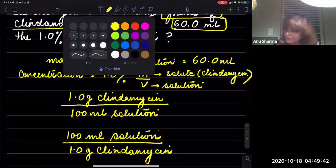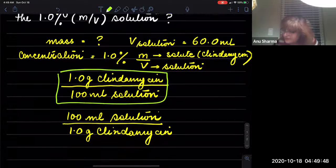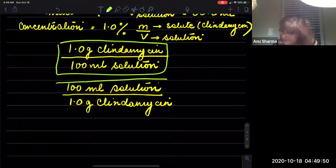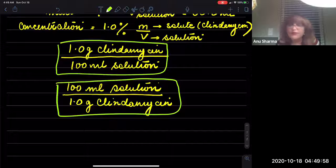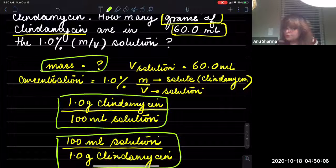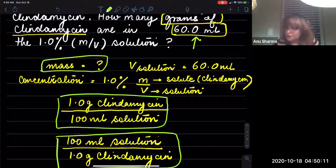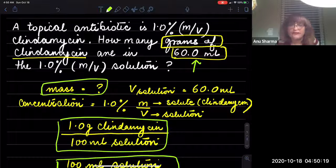Now, out of the two conversion factors we created, which one are we going to use? We are definitely going to use the one that eliminates the milliliters of the solution, because we need to find the mass. We know this is 60 milliliters of the solution, and we need to find how much clindamycin in grams is in that volume.